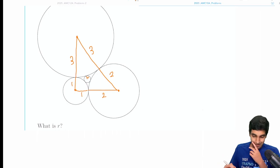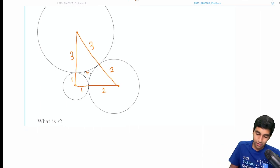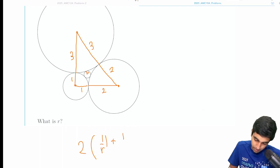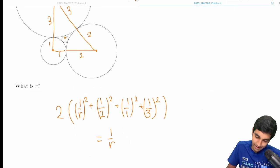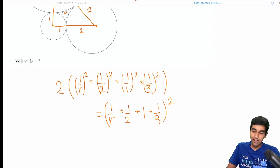So one is the cheat code way. It's pretty simple. The formula is just saying that because it's externally tangent, we have this Descartes' rule: 1 over r plus 1 over r squared, plus 1 over 2 squared, plus 1 over 1 squared, plus 1 over 3 squared. This is the Descartes' rule of circles.